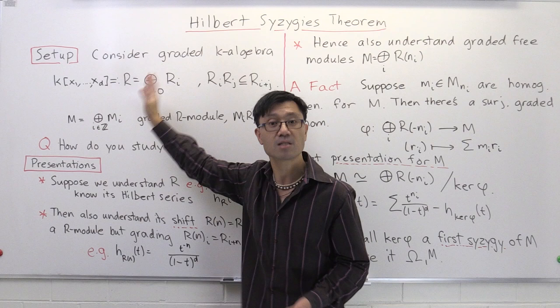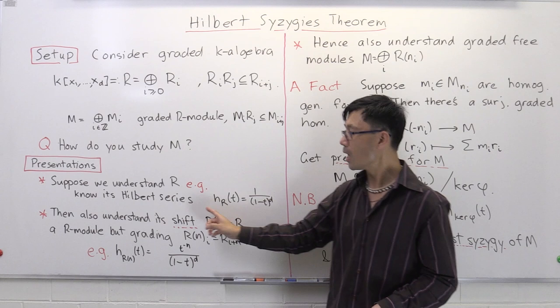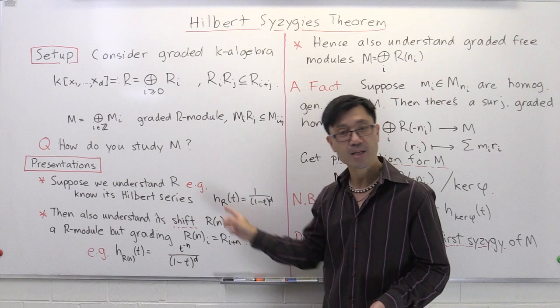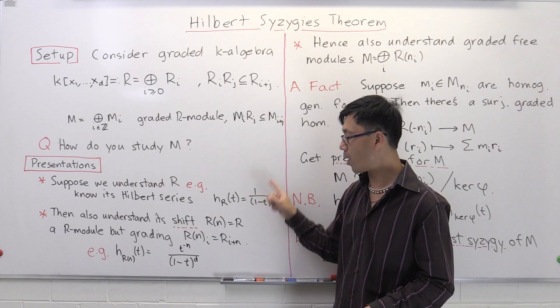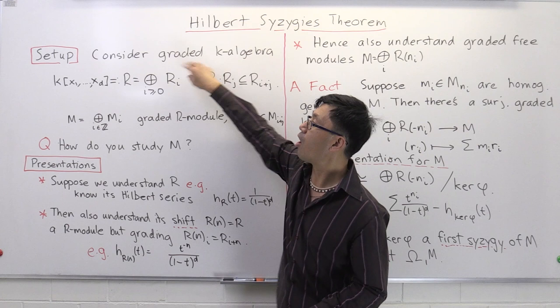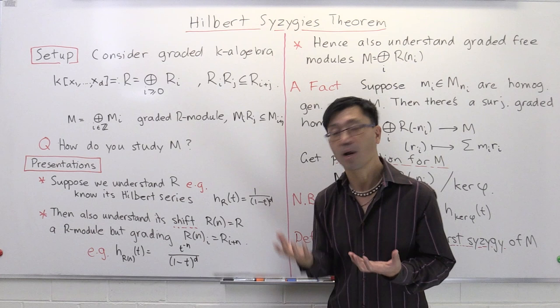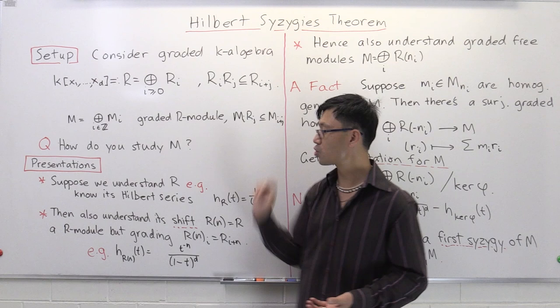Let's suppose that at least we understand this ring itself as a module over itself — that's our starting assumption. One way we understand it is, for example, if you want to talk about its size, one way to do that is via its Hilbert series. We've seen how to look at its Hilbert series in a previous video. The Hilbert series here is a function of t, and it's just 1/(1 − t)^d. This gives you the dimension of all these graded pieces — useful information about this module.